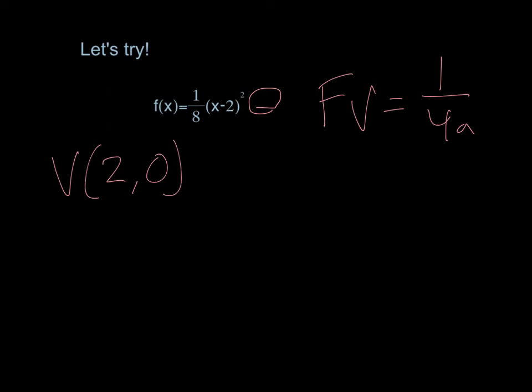So FV, that tells us how far away the focus is from the vertex. So let's plug in some numbers here. We have FV equals 1 over 4 times one-eighth. So it's important to notice here that it's 1 over 4a, not one-fourth a. So this is going to be equal to 1 over one-half, which is equal to 2. So the distance between the focus and the vertex is 2.